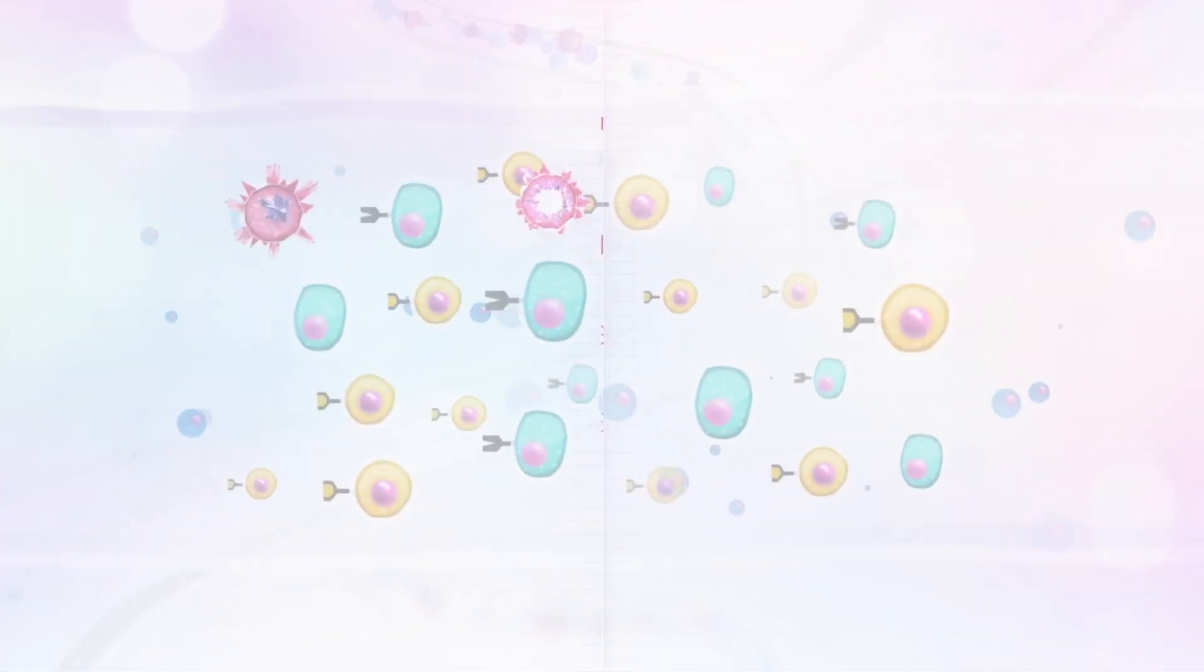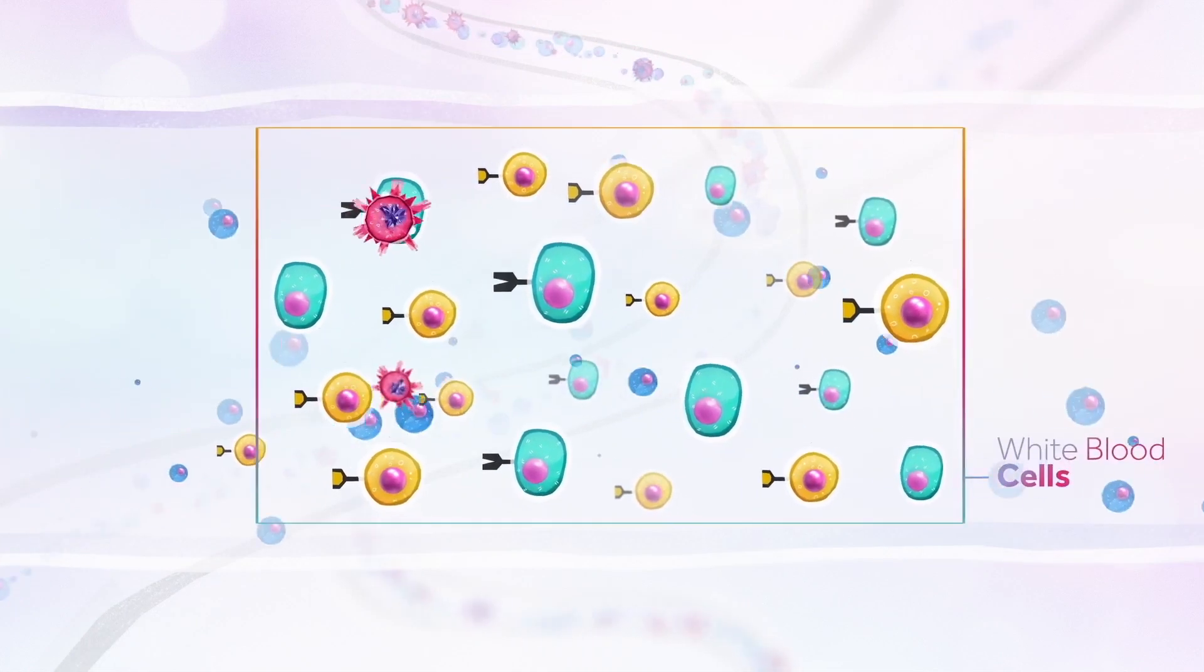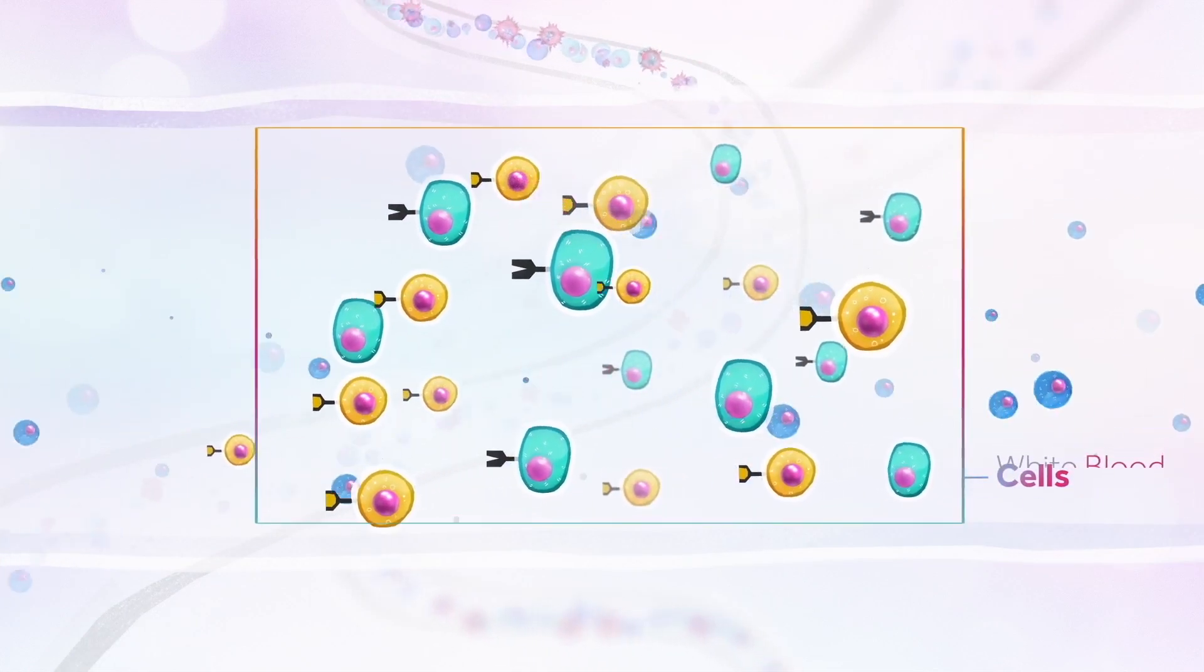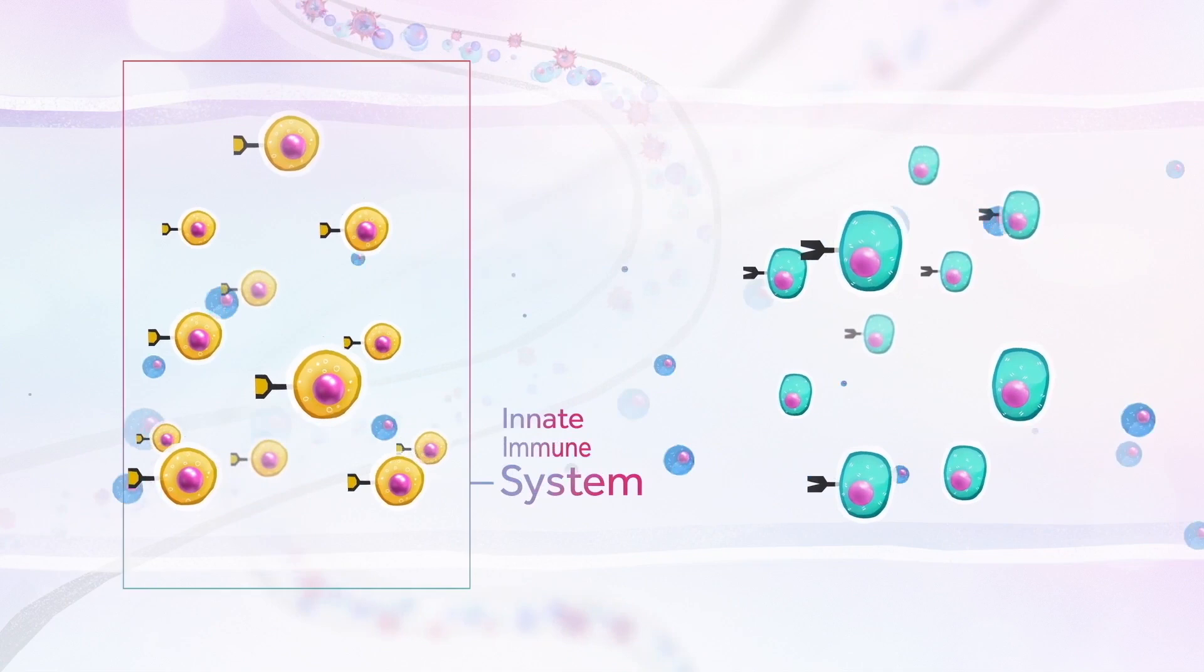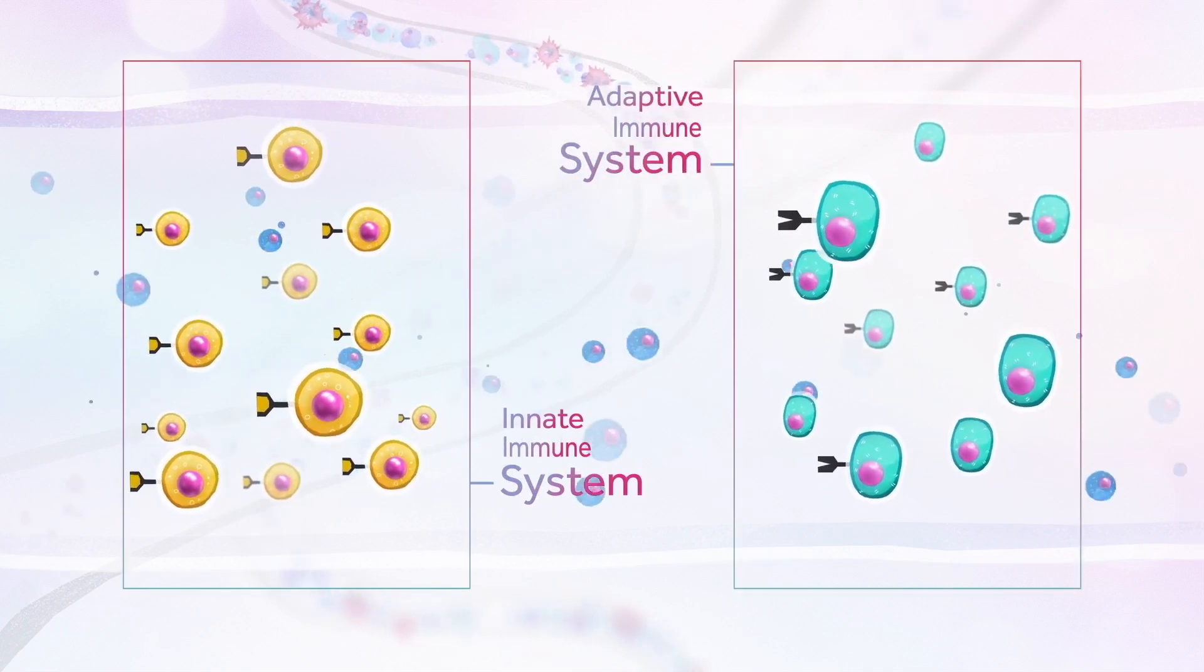This defense is provided by cells circulating in the blood called white blood cells through two main mechanisms: the innate immune system and the adaptive or acquired immune system.